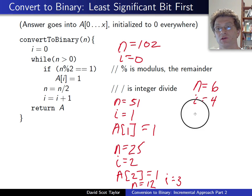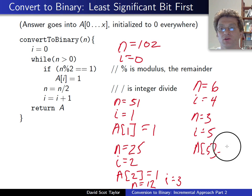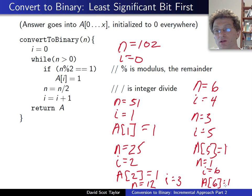n is still even. n equals 3, i equals 5. That's odd. a of 5 equals 1. n equals 1, i equals 6. a of 6 equals 1. And after that, we're going to divide. n is going to go to 0. We're going to return a. We see here we've set the 6th, 5th, 2nd, and 1st bits just like before.